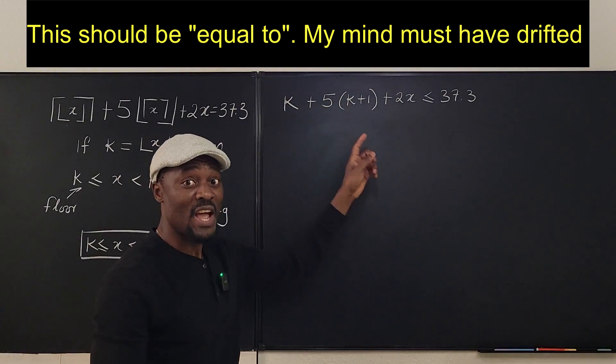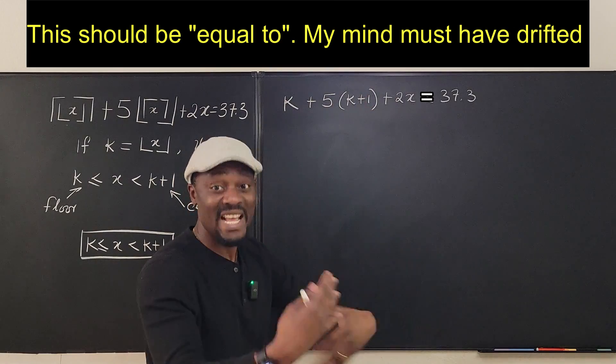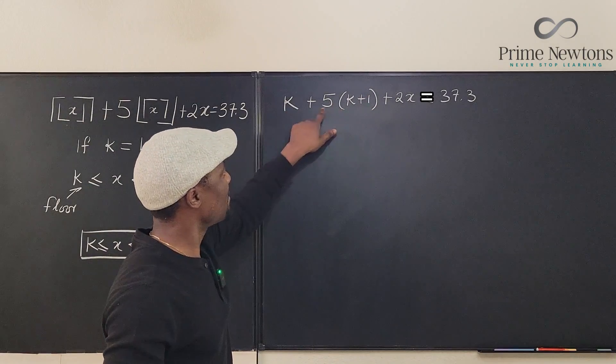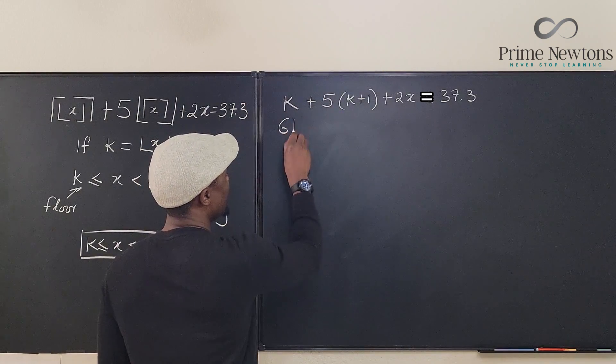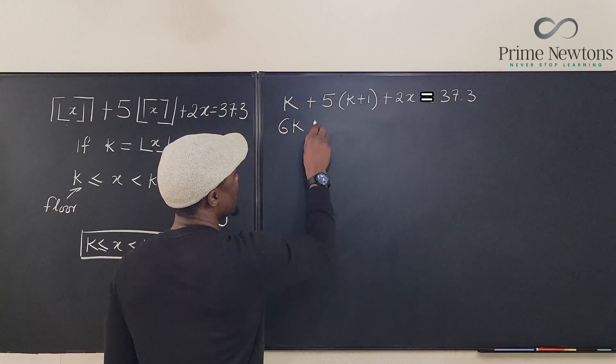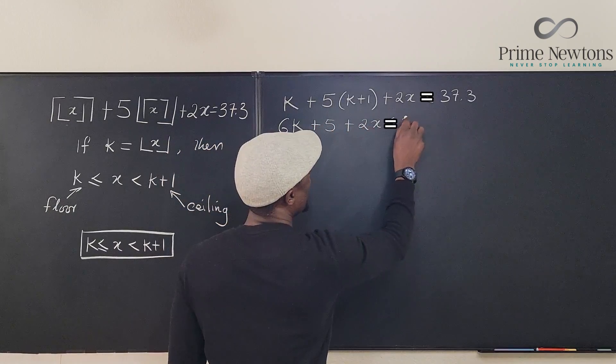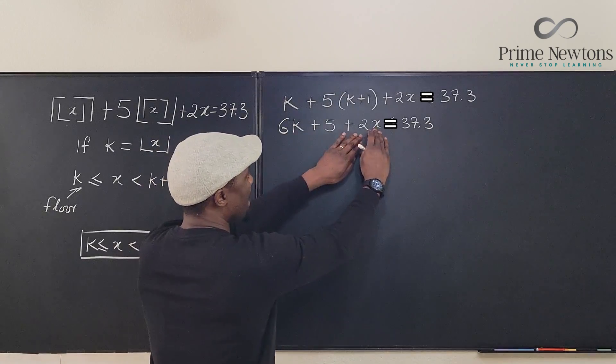All you have to do is distribute. Our mission now is to write x in terms of k. That's the next move you make every time. So here if we distribute this, this is 5k, add it to this, that's 6k. So we have 6k and then 5 times 1 is plus 5, plus 2x equal to 37.3.